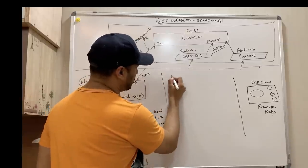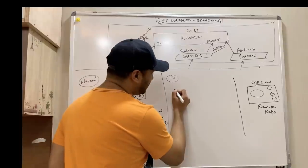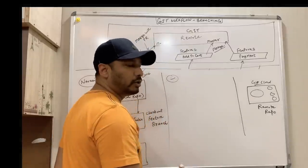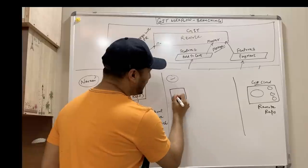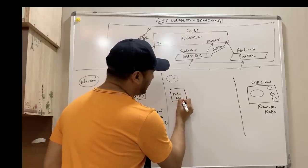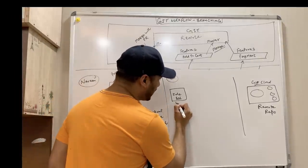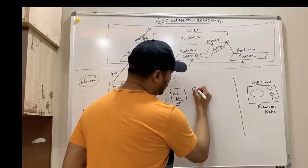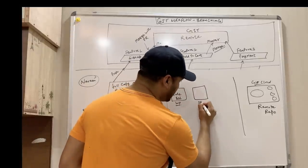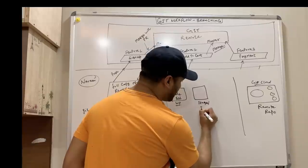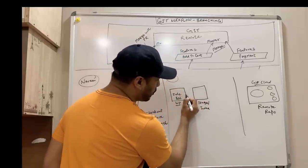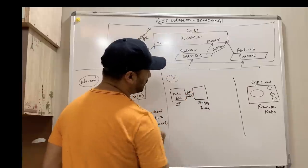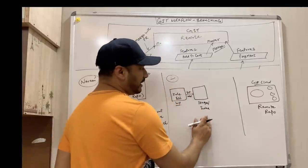Let's say you are sitting here, working on a particular product and writing some code — it could be development code, automation code, or any kind of file. It's not only about Java or Python code. Let's say this is your Eclipse or any IDE you are using. This is called the working copy. After that, there is a stage called stage or index.